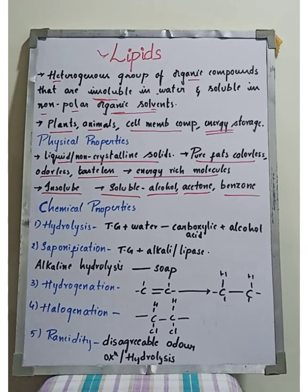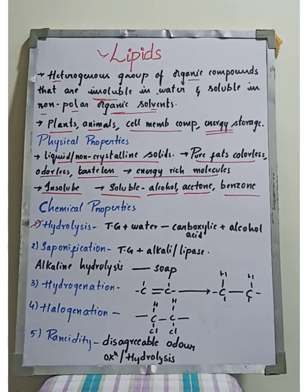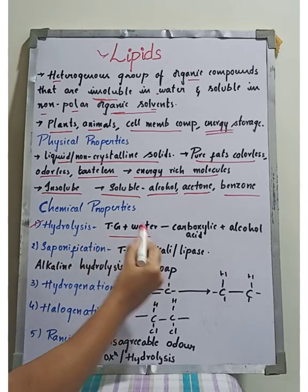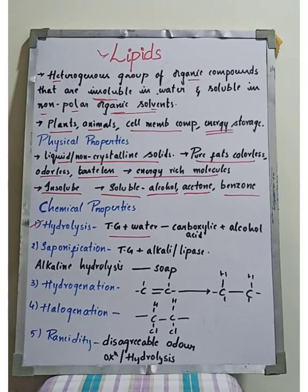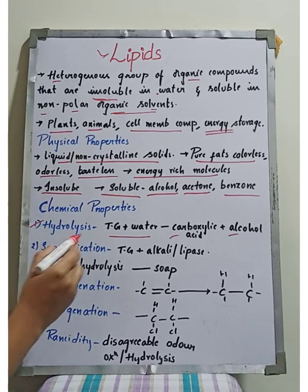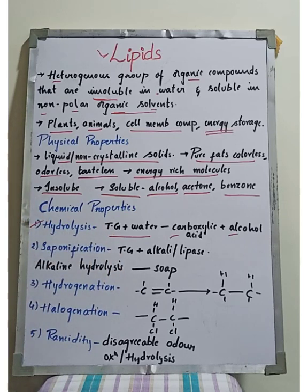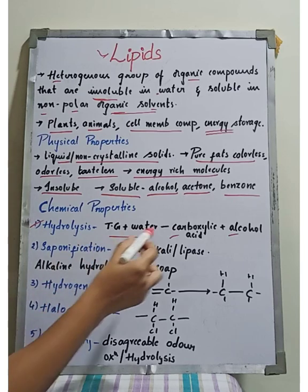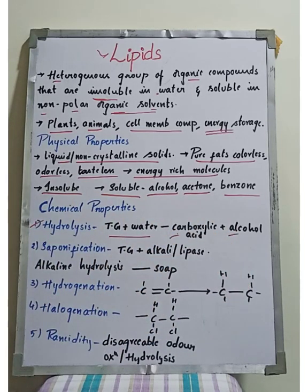Now let's look at the chemical properties of lipids. The first chemical property is hydrolysis — a reaction with water. Triglycerides upon hydrolysis will break down and become soluble, forming carboxylic acid and alcohol. So, triglycerides upon hydrolysis form carboxylic acid and alcohol.